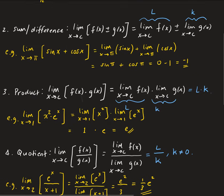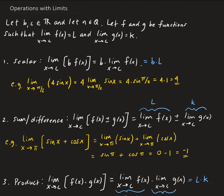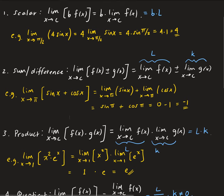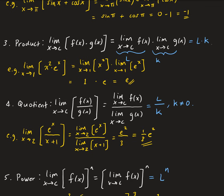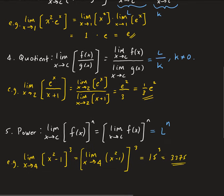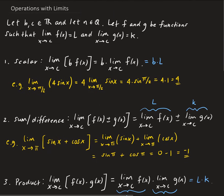So these are the five basic operations with limits. First, the scalar — you can take out the scalar and then take the limit. Second, the sum or difference — you can distribute the limit over addition or subtraction. Third, the product — you can distribute the limit over a product. Fourth, the quotient — you can distribute the limit over the quotient of two functions. And fifth, the power rule — you take the limit of the function first, then raise it to the given power.